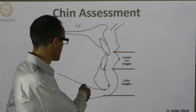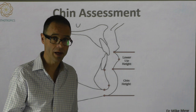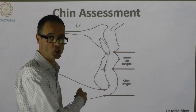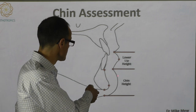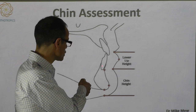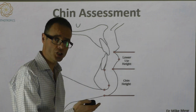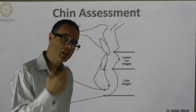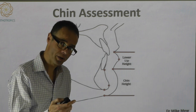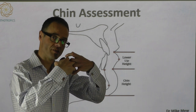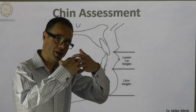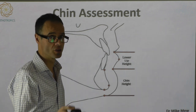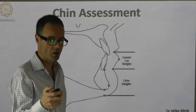Point B is very dependent on the position of the lower incisors, and the position of the lower incisors, the function and posture of the lower lip, are very codependent. So the lower incisors are frequently affected by the position and function of the lower lip.